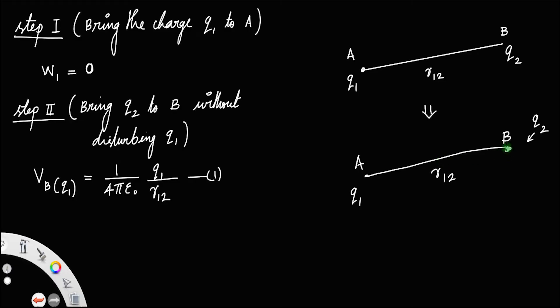If you have any doubt regarding this derivation, you can always go and check the video on the topic electric potential at a point due to a charge. I will put the link in the description below. So, there is a potential at B.